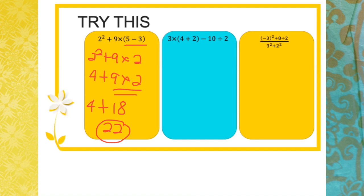Second example: we do the brackets first, giving 3 × (4 + 2) - 10 ÷ 2, which is 3 × 6 - 10 ÷ 2. Since multiplication and division are the same level, we go left to right: 3 × 6 = 18, then 10 ÷ 2 = 5. So 18 - 5 = 13.